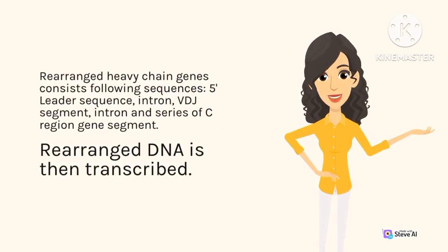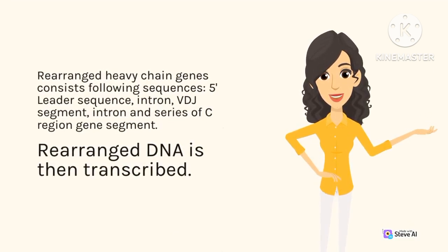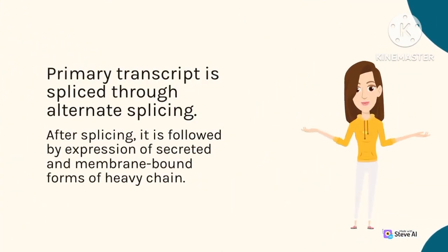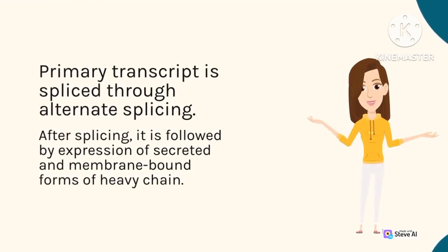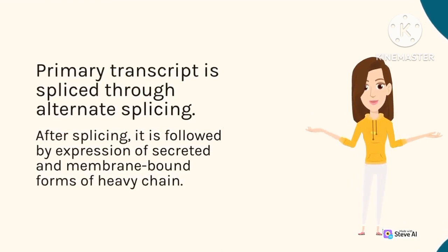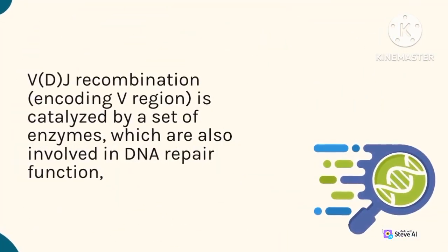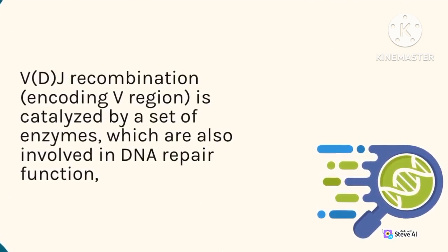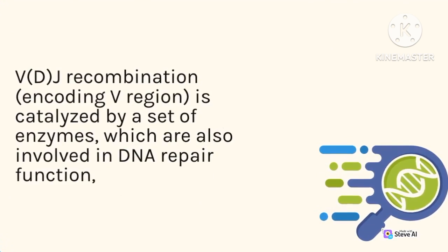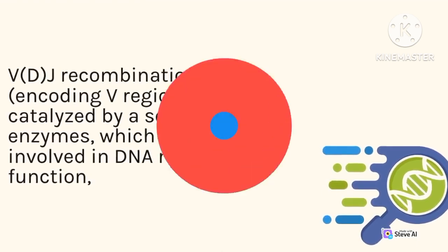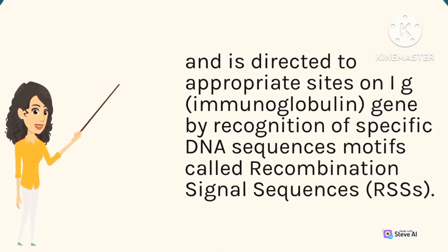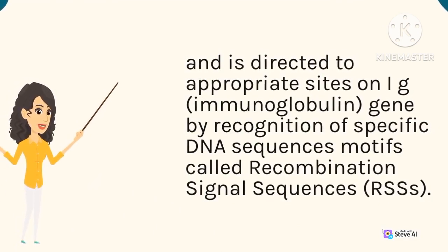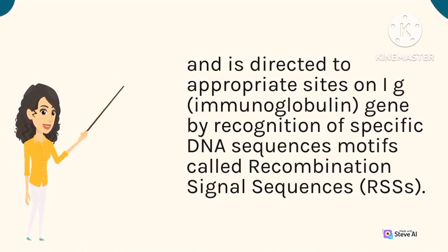The rearranged DNA is then transcribed. The primary transcript is spliced through alternate splicing, followed by expression of secreted and membrane-bound forms of the heavy chain. VDJ recombination encoding the V region is catalyzed by a set of enzymes also involved in DNA repair, and is directed to appropriate sites on immunoglobulin genes by recognition of specific DNA sequence motifs called recombination signal sequences (RSSs).